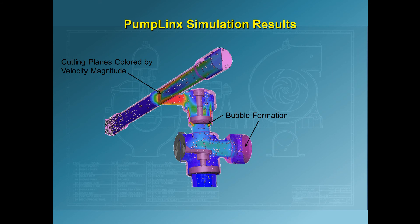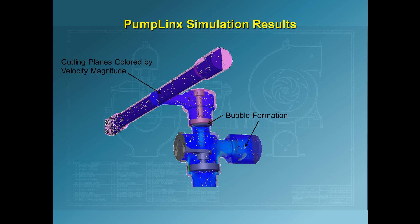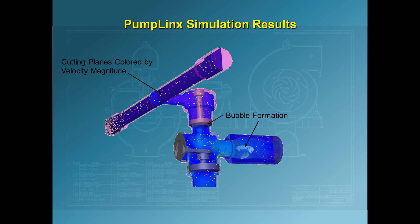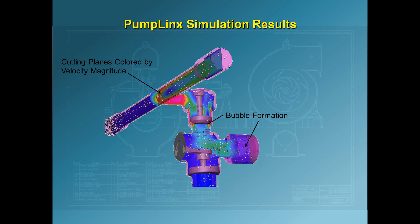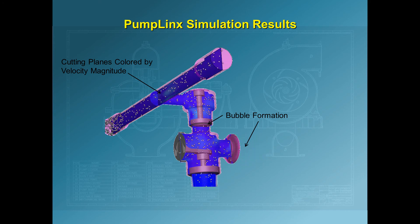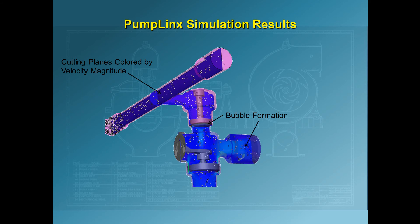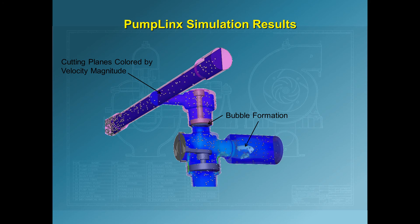During the compression stroke, the inlet valve closes and the outlet valve is forced open by the fluid pressure. In this simulation, Pumplinks predicts the motion of the valves using the force balance of the pressure integrated over the valve surfaces, the valve mass, and the restoring spring force.